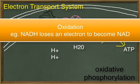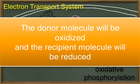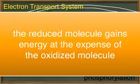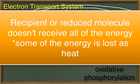During these steps, molecules lose electrons in a process called oxidation. When one molecule loses an electron, another molecule will gain it in a process called reduction. When electrons are passed from one molecule to another, the electron donor is oxidized and the electron recipient is reduced. Oxidation and reduction are important because electrons carry chemical energy. In a typical oxidation-reduction reaction, the reduced molecule gains energy at the expense of the oxidized molecule. You can remember that molecules are oxidized when they lose electrons and reduced when they gain electrons by remembering the words OIL RIG: oxidation is loss and reduction is gain. Some energy is always released as heat; the remaining energy will be used to form ATP.